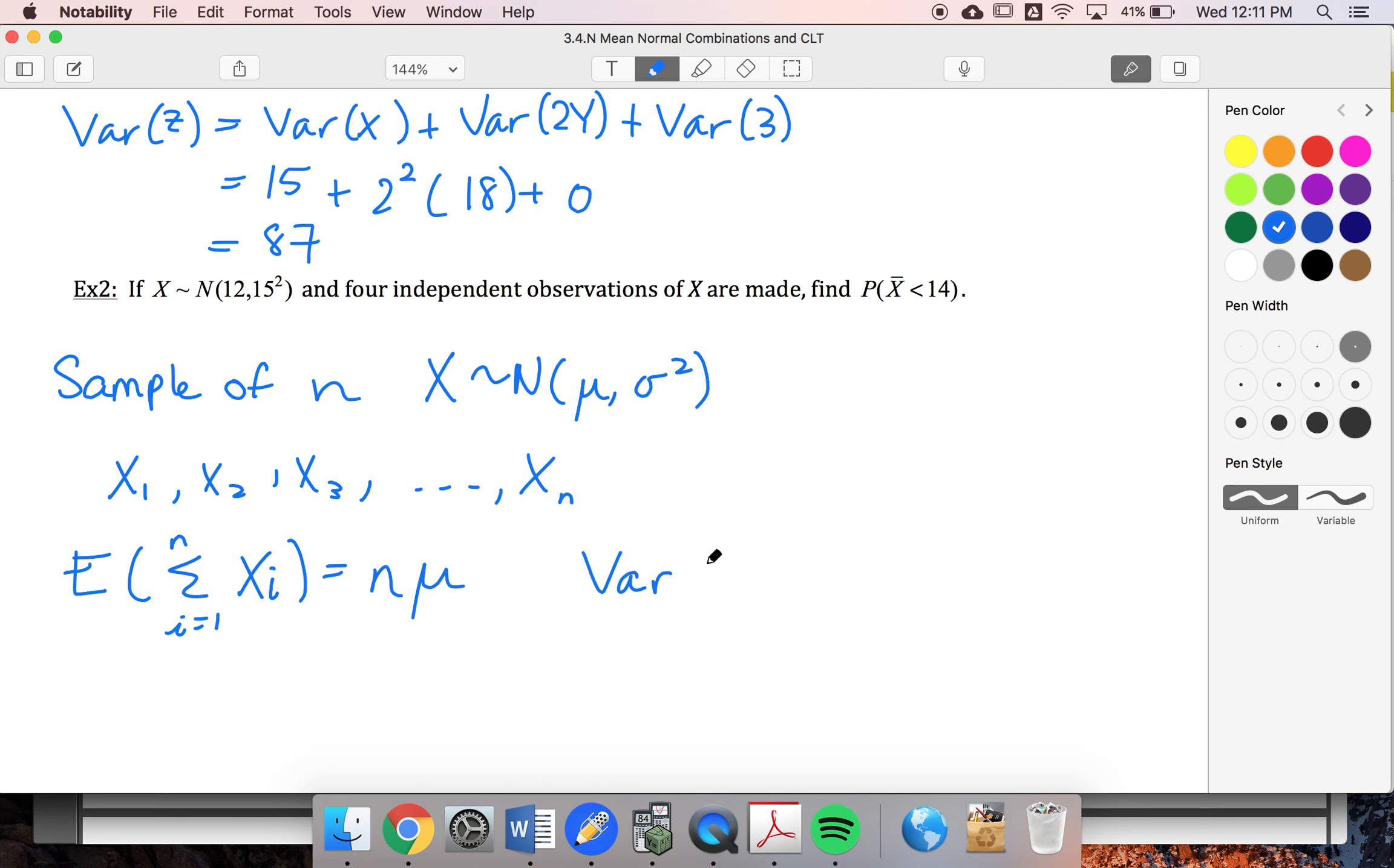My variance, if I do the same thing and do a linear combination of all of those, well, this is going to be variance of x1 plus variance of x2 plus variance of x3. So remember with variance, it's not that I'm saying this is n xi's, because then my variance would become n squared sigma squared. Instead, I'm doing variance of x1 plus variance of x2 plus variance of x3, etc.